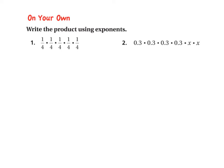Grab a piece of paper. Let's look at the on-your-own number 1, and we'll do number 2 in a second as well. Looking at number 1, you can automatically tell which is your base number — in this case it's 1 fourth. So I have 1 fourth, and then I just count how many do I have: 1, 2, 3, 4, 5. So I'm going to have 1 fourth to the power of 5. With fractions, you do need to add parentheses — it makes the math simpler. If you ever just want to be on the safe side, you can add parentheses.